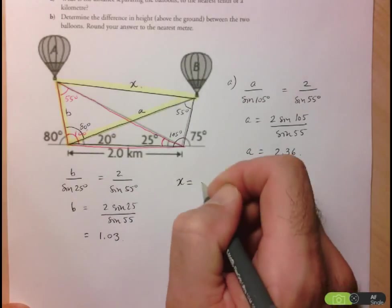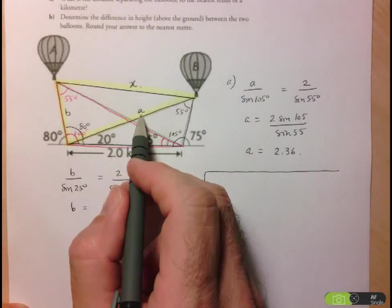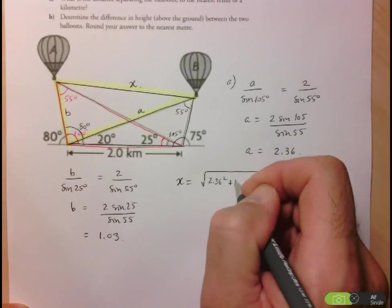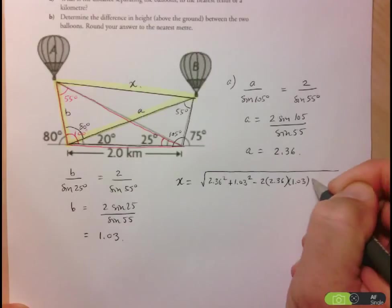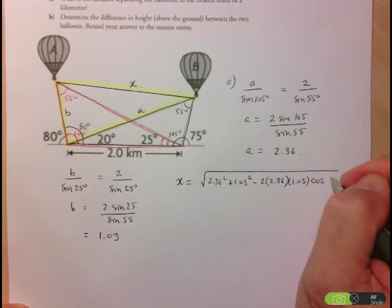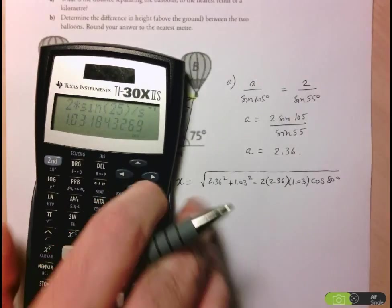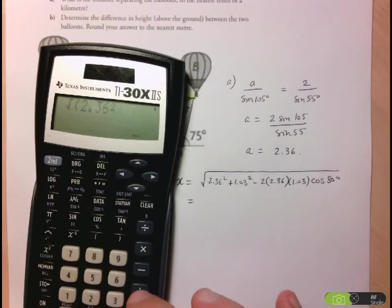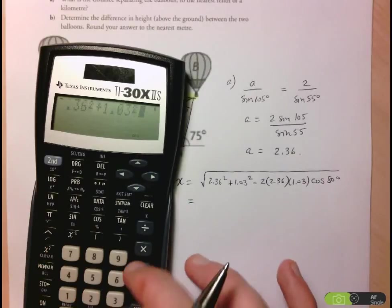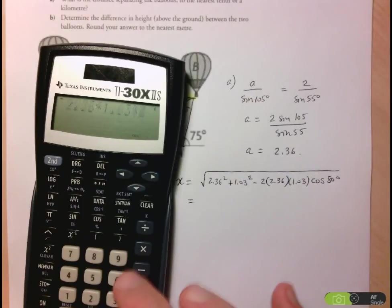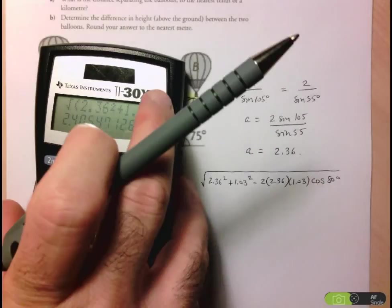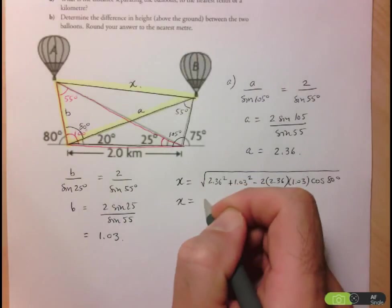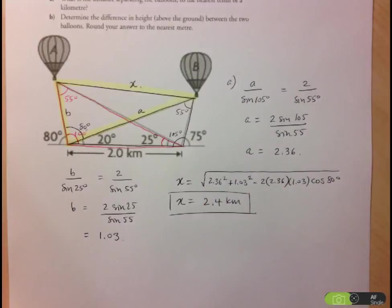So let's do that here. X is going to be equal to the square root of the sum of the squares of the other two sides. So 2.36 squared plus 1.03 squared minus 2 times 2.36 times 1.03 times cosine of the opposite angle to X, which is 80 degrees. Let's calculate that here. The square root of 2.36 squared plus 1.03 squared minus 2 times 2.36 times 1.03 times cosine of 80. And that gives us 2.41. But since they asked us for the answer to the tenth of a kilometer, I'm just going to leave the answer as 2.4. So X is equal to 2.4 kilometers. And that's our answer for the first part.